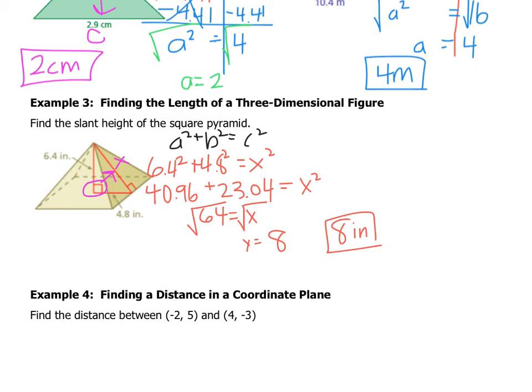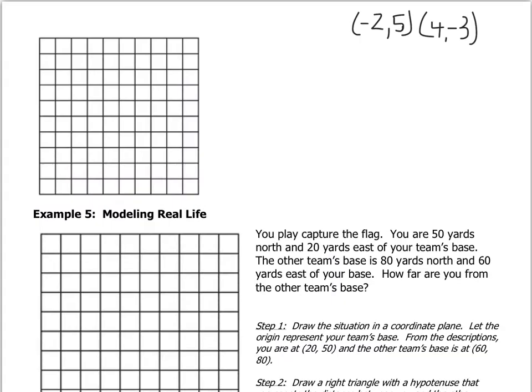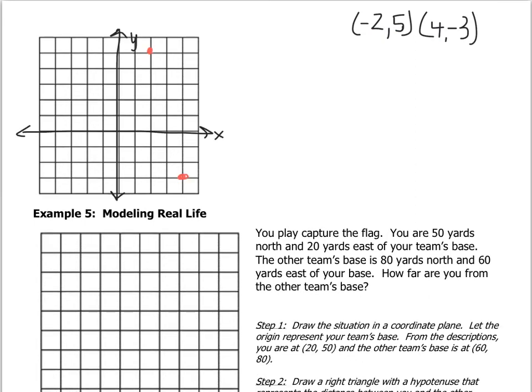Now you can also do this on the coordinate plane. You can use the Pythagorean theorem to find the distance between points. Now I don't know why my grid went on to the next screen, so let's just move on to the next screen. It wants us to find the distance between these two points right here. So what I'm going to do is I'm just going to sketch a grid, plot the points. Why don't you pause the video and do that on your own now. Just plot those two points.